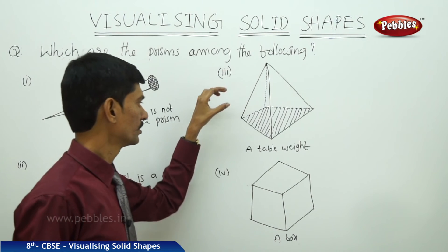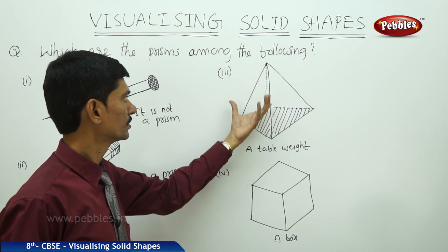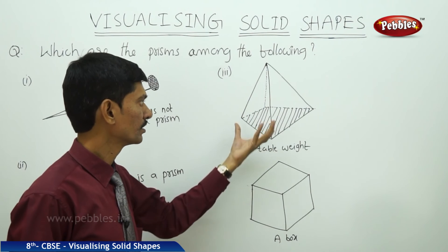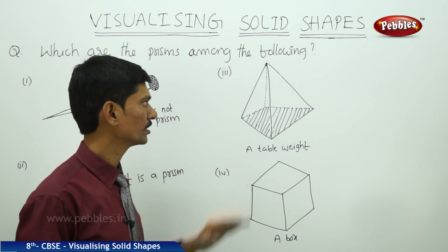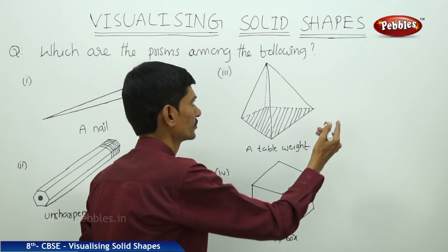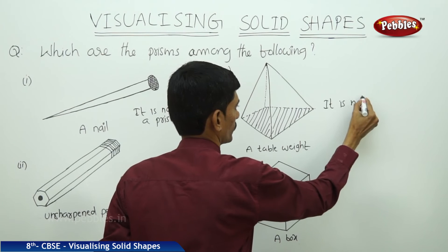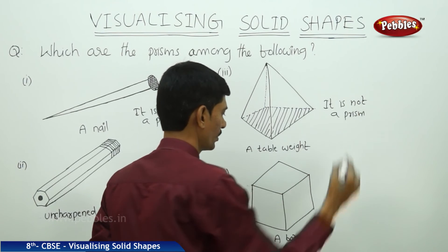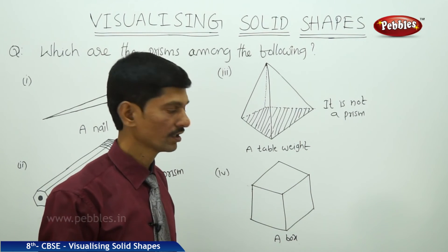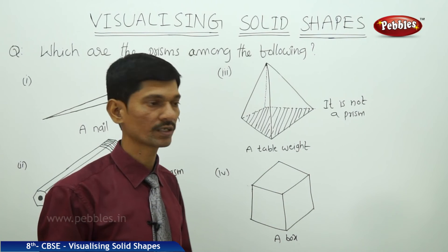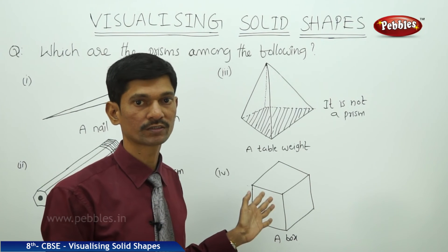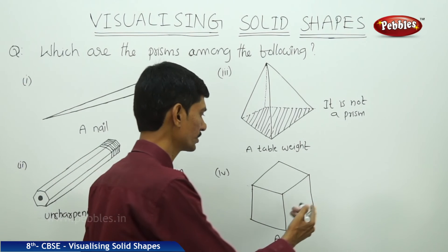A table weight looks like a pyramid: the top is a vertex and the base is a polygon, and the lateral faces are triangular, not parallelograms — so it is not a prism. A box is a cuboid: all lateral faces are squares, and the top and base are also squares, which are congruent regular polygons. The lateral faces are parallelograms, so it is a prism.